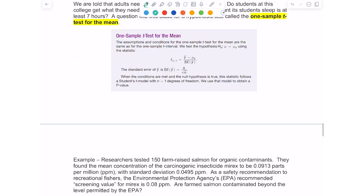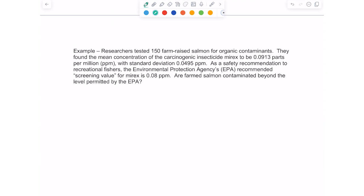Researchers tested 150 farm-raised salmon for organic contaminants. They found the mean concentration of the carcinogenic insecticide murex to be 0.0913 parts per million, with a standard deviation of 0.0495 parts per million. As a safety recommendation to recreational fishers, the Environmental Protection Agency's recommended screening value for murex is 0.08 parts per million. Are farm salmon contaminated beyond the level permitted by the EPA? In order to determine this, we need evidence, and we need to do a hypothesis test.